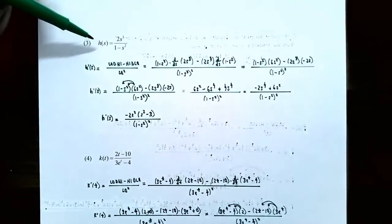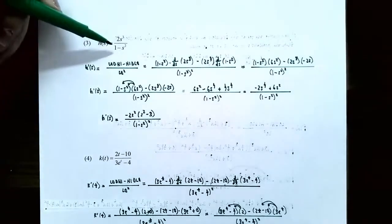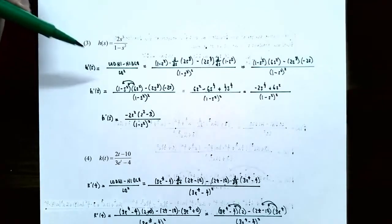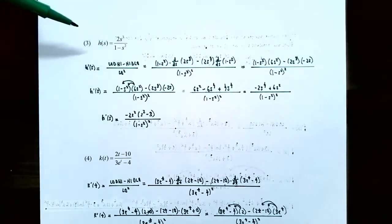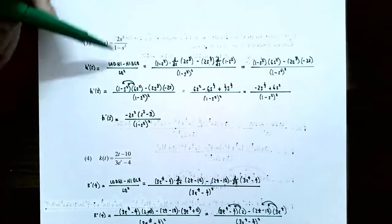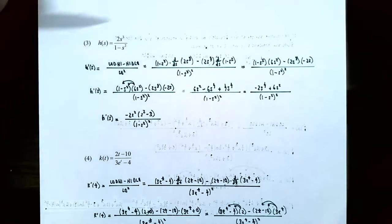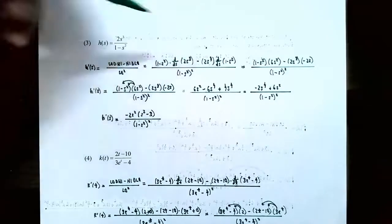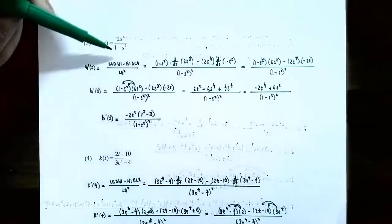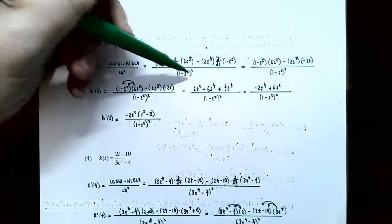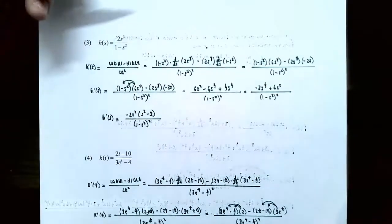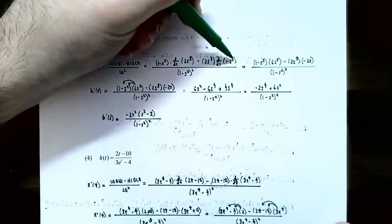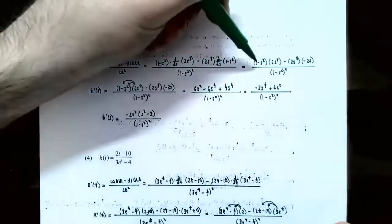Number 3: the function h of s is 2s cubed in the numerator and 1 minus s squared in the denominator. You can't simplify this because there are two different terms in the denominator. Since this is a fraction of two different functions, use the quotient rule. So h prime of s is low d high minus high d low over low squared. The denominator is 1 minus s squared, times the derivative of 2s cubed, minus 2s cubed times the derivative of 1 minus s squared, all divided by 1 minus s squared, all squared.